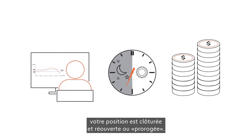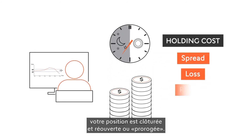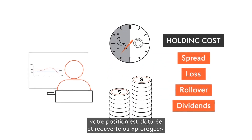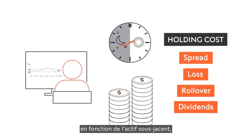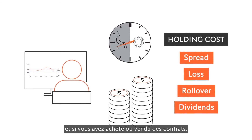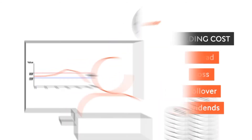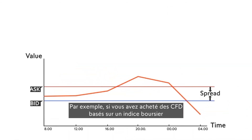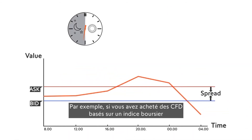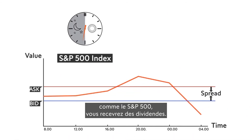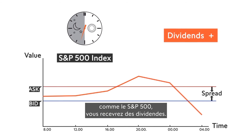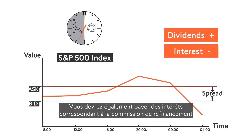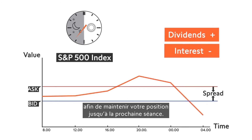Your position is closed and reopened, or rolled over. In addition, your trading account will be adjusted depending on the underlying asset and whether you have bought or sold contracts. For example, if you have bought CFDs based on a stock index like the S&P 500, you will receive dividends. You will also pay interest that corresponds to the rollover fee to maintain your position overnight.